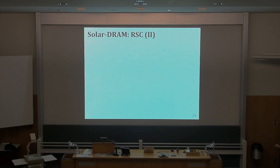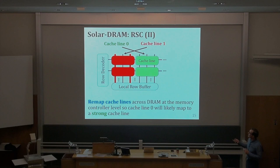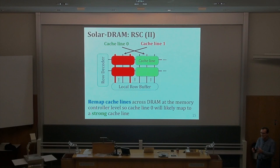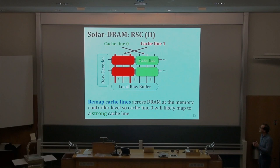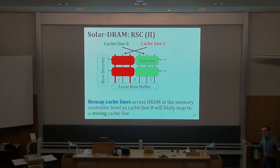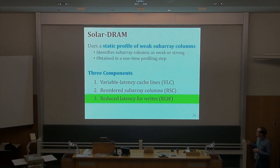Reordered sub-array columns is based on the observation that when accessing the zeroth cache line in the address space, it turns out that whenever you access a row for the first time, the access to the zeroth cache line in that row is more frequent — about 22% of the time. If you map the zeroth cache line to the strong bit lines, you can access it with low latency. We map cache lines at the memory controller level such that cache line zero will likely map to a strong cache line.